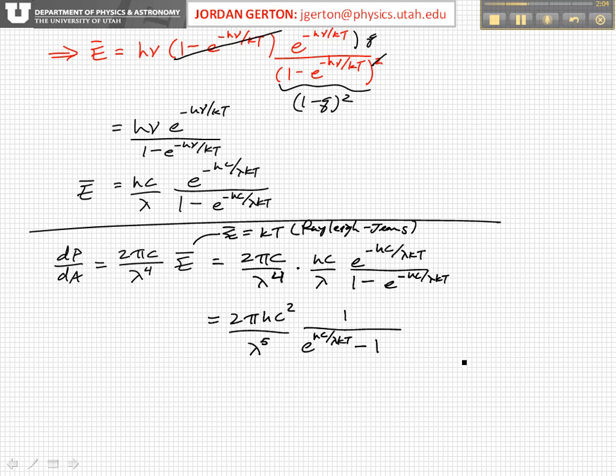And that is the final form of - this is Planck's law expressed in terms of wavelength. And it exactly describes the black body radiation spectrum that we've discussed.